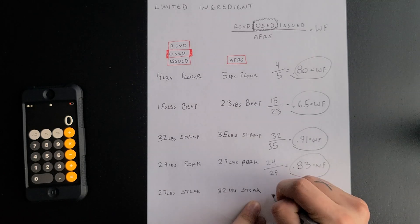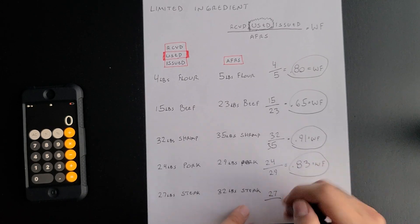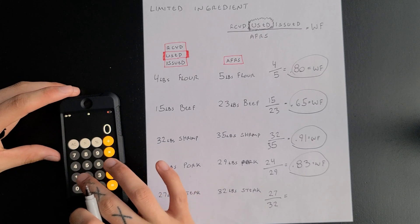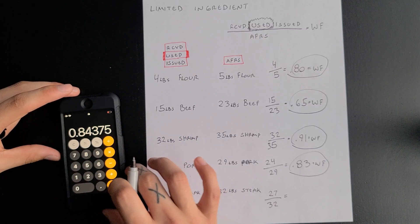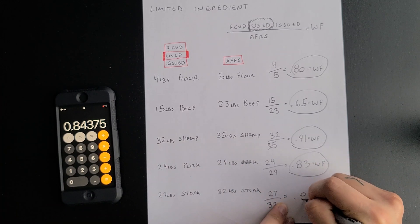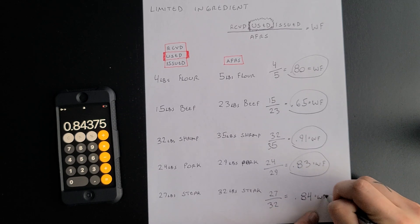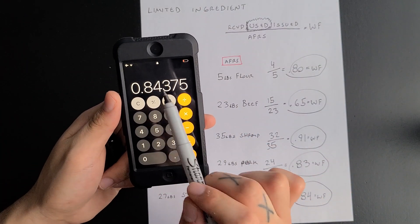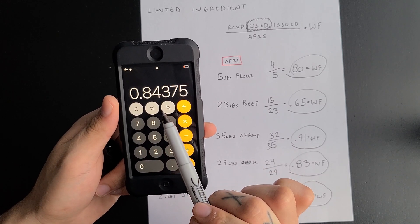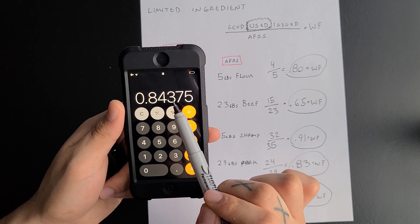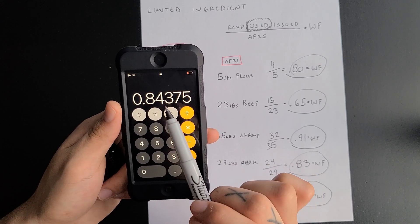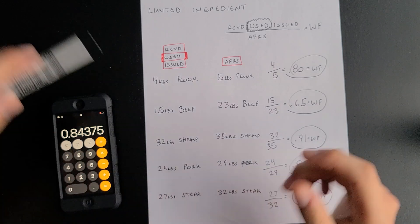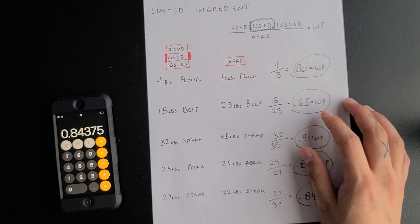This last one: the 27 pounds that were used divided by your 32 pounds of steak, which is what your recipe calls for. That equals 0.84 — that is your working factor. We round up to the hundredths place. If the third decimal digit is four or below, this stays the same. If it was five or above, it would round up to 0.85. But here it's four or below, so it stays the same. That's how you obtain your working factor using your limited ingredient formula.